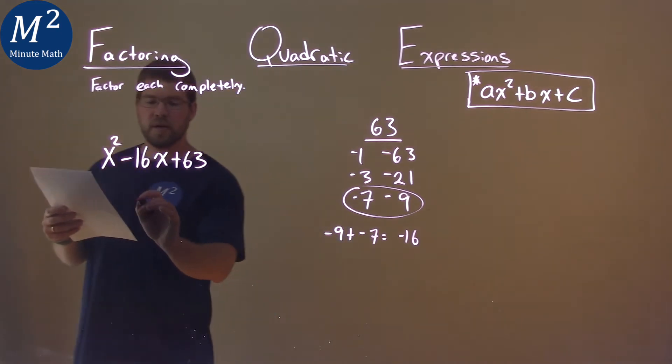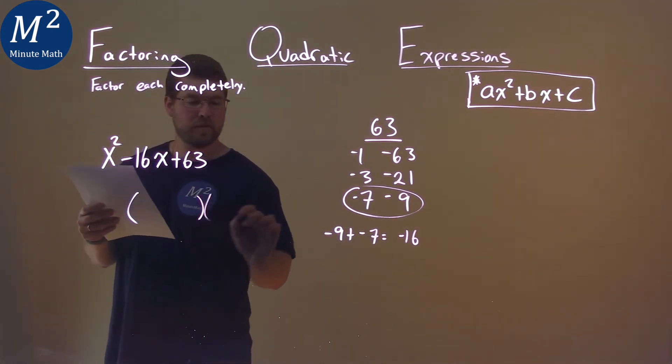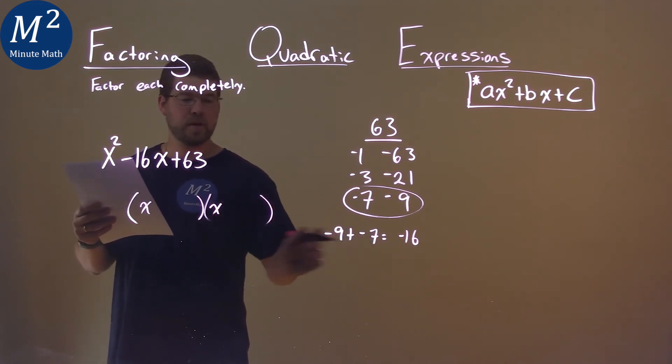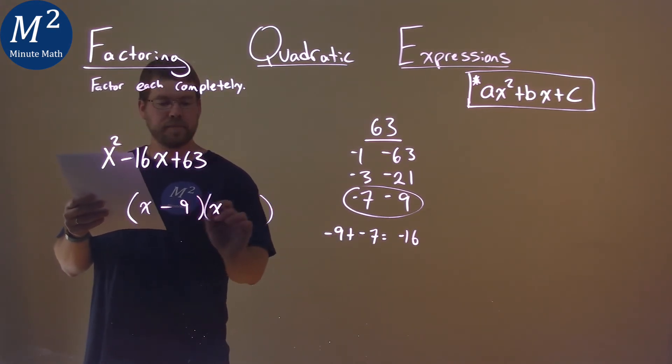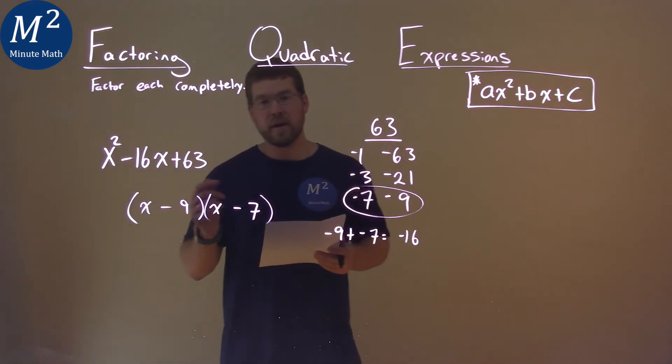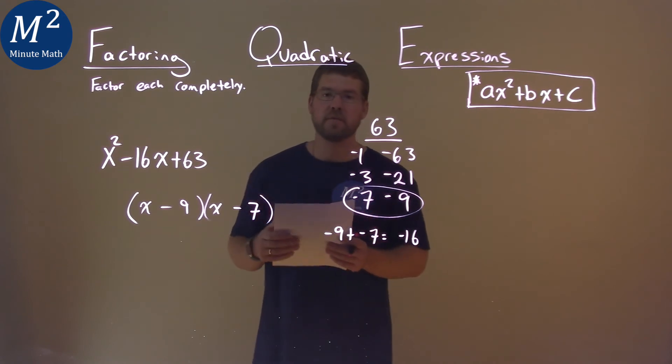So with that information, we can factor this. We have our basic factored form here. We have x and x here. And we put our two numbers, minus 9 here, and minus 7. And so our final answer here is x minus 9 times x minus 7.